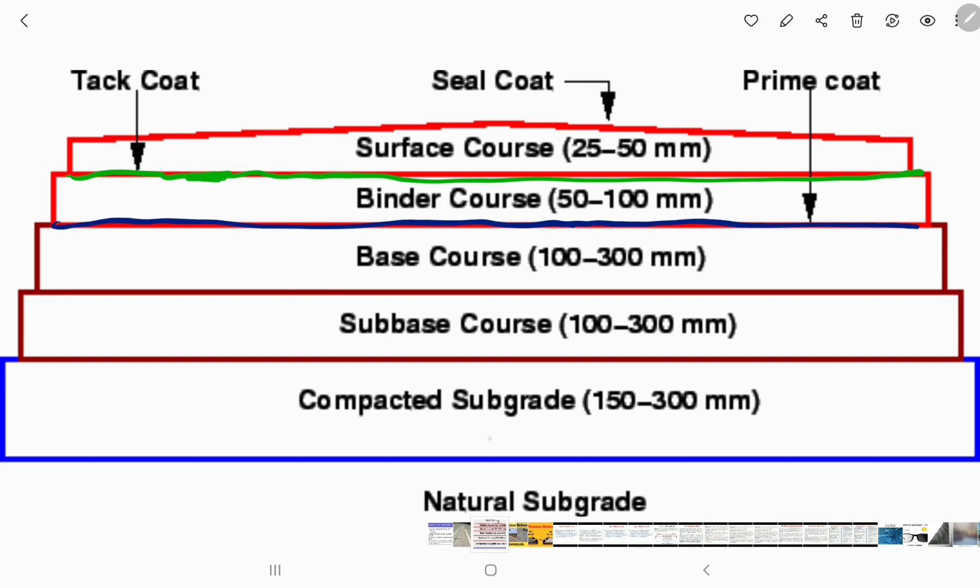Subgrade is a compacted subgrade. Subgrade is the ground. Flexible pavement is a layered figure. The thickness is a form and the parts are easy to identify. The subgrade is the ground-level foundation, and it is the base of the road structure.